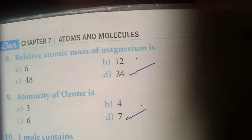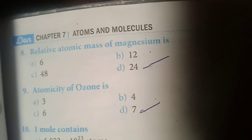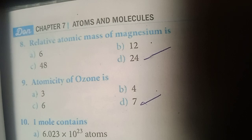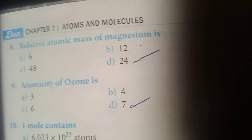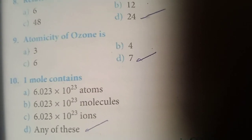Relative atomic mass of magnesium is 24. Option D is the answer. Ninth one. Atomicity of ozone is 7. Option D is the answer. Tenth one.